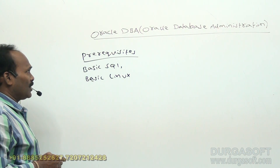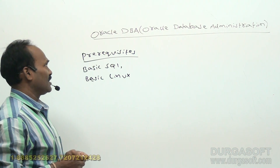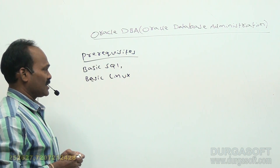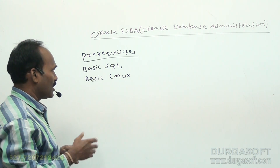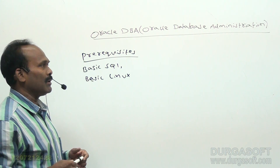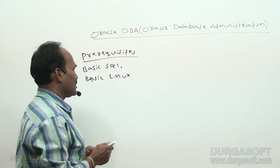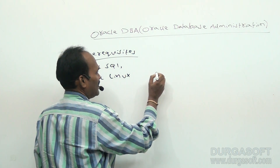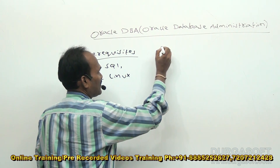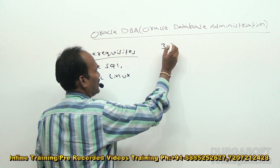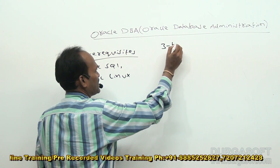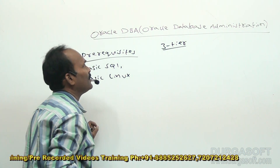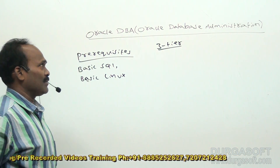Before going to start this Oracle Database Administration course, I would like to explain first what is the role of a DBA and where a DBA will be working. In order to explain that, I would like to explain a 3-tier architecture, where we are going to see the role of the Oracle Database Administrator.